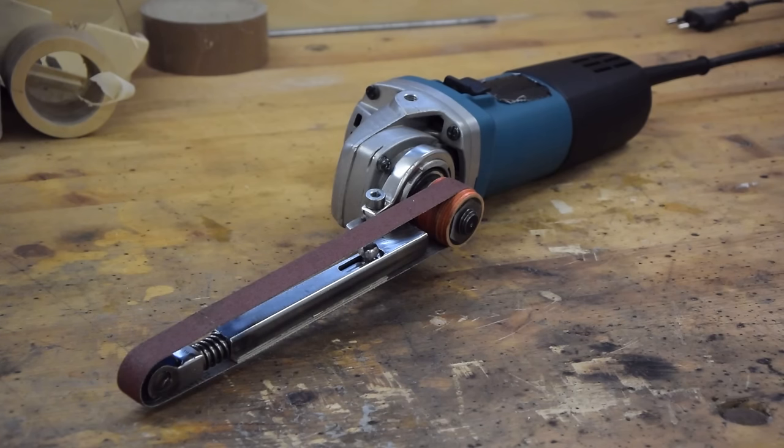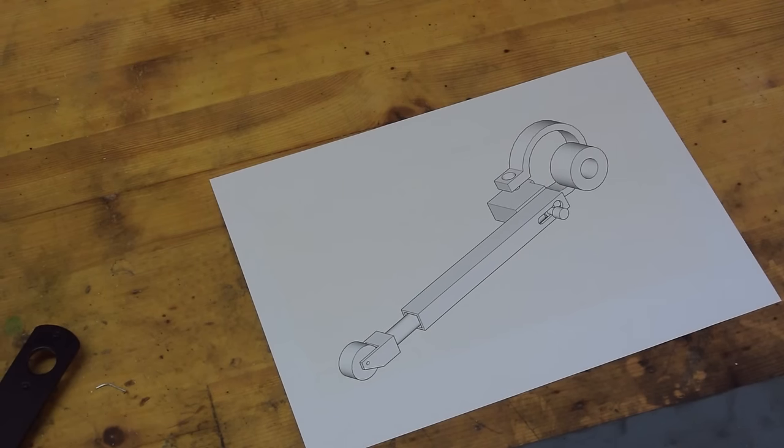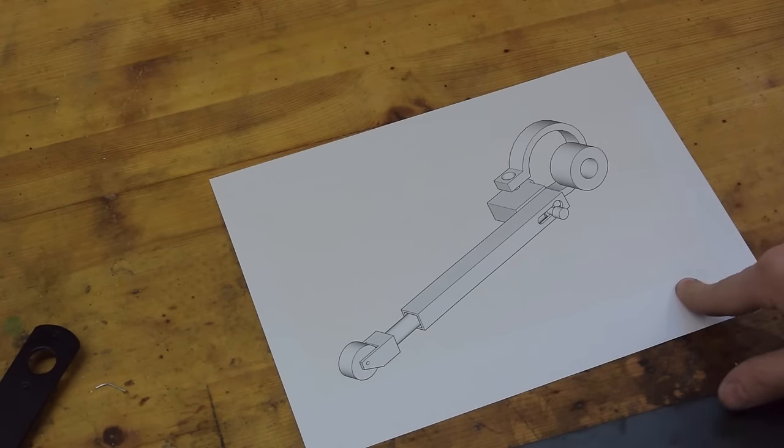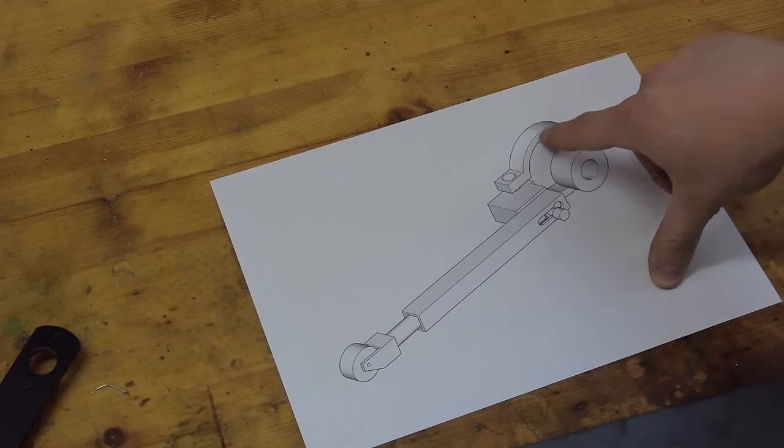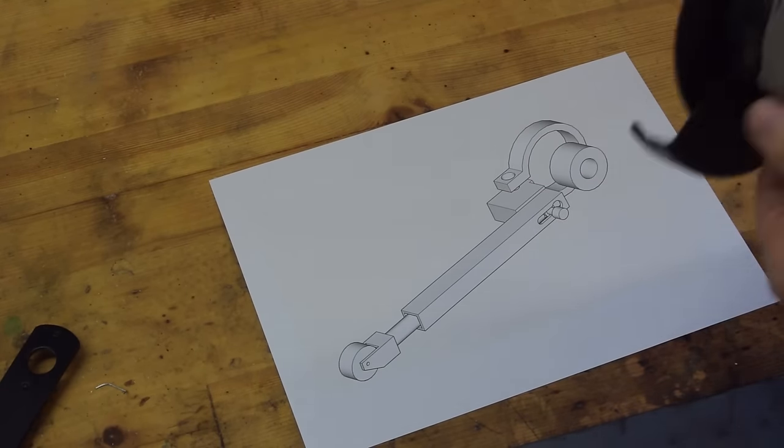But if you enjoy making stuff, you can, of course, make one yourself. I made a quick drawing of what that thing is probably gonna look like. And the first part I wanna make is this clamp that goes around the neck of the grinder.